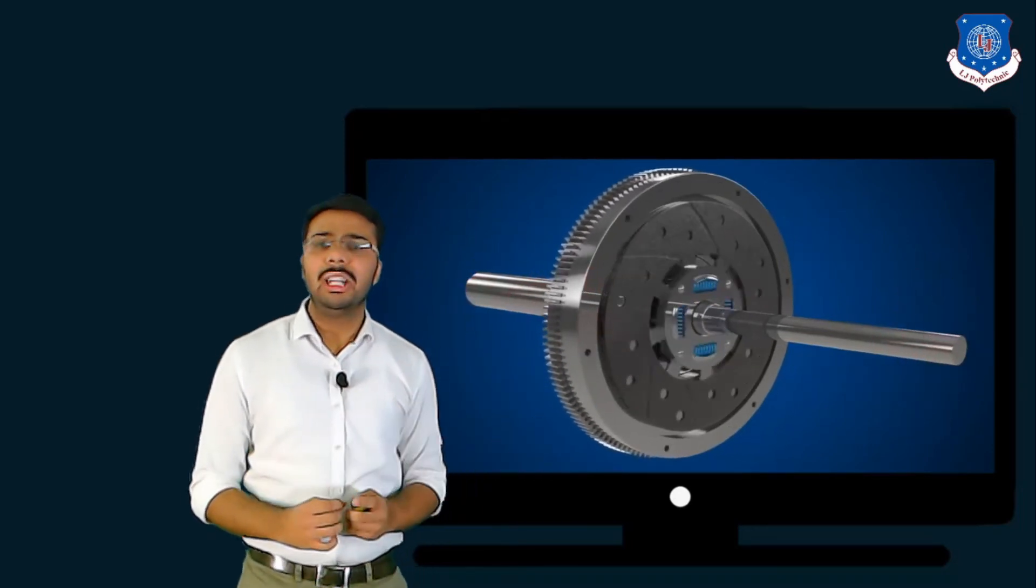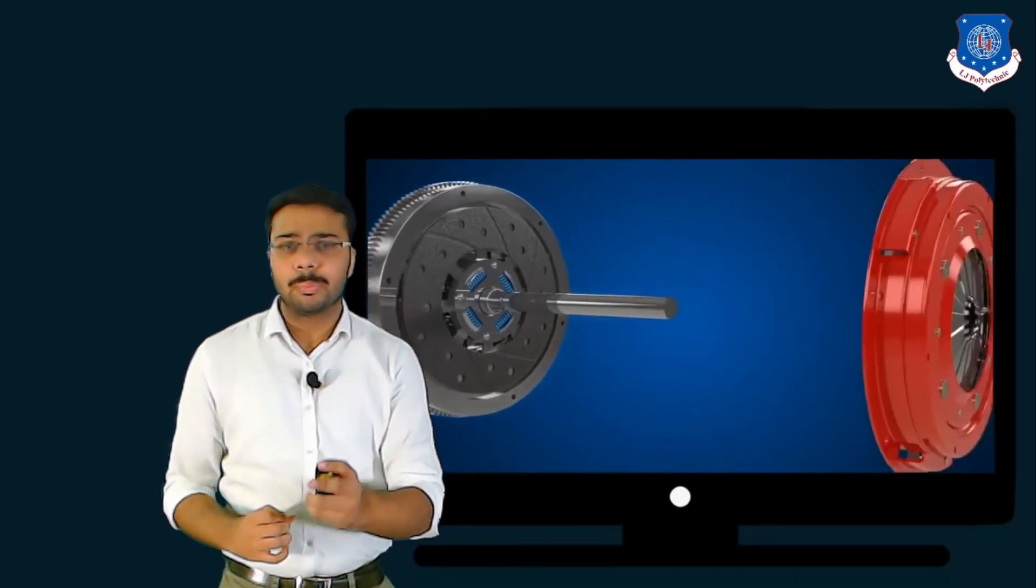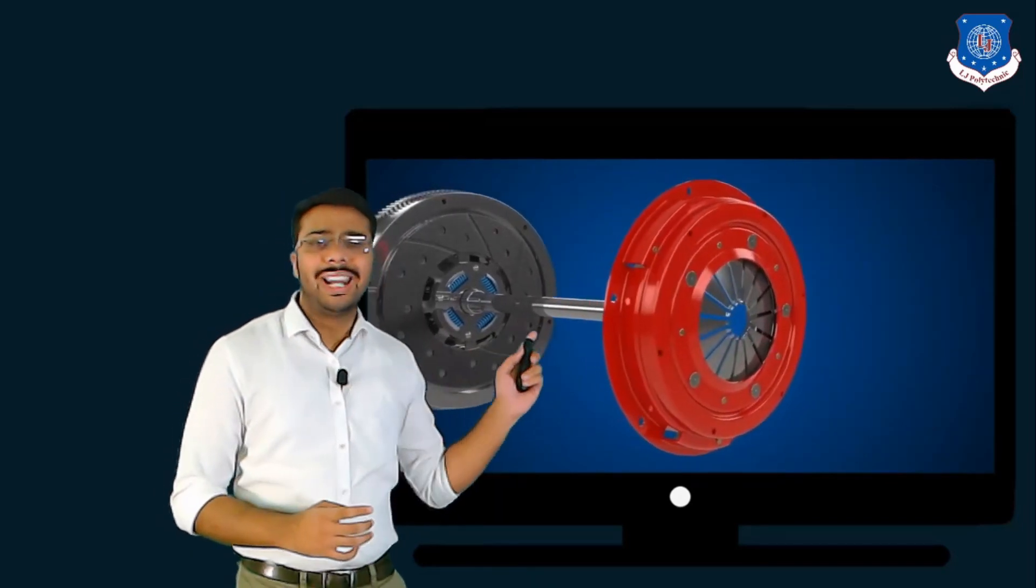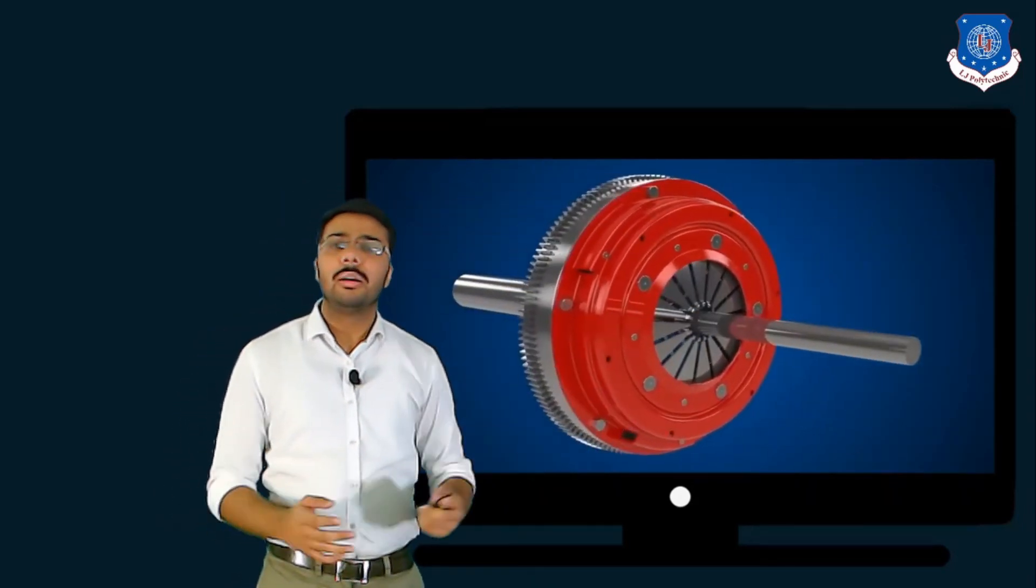Over it is the assembly of the diaphragm spring and pressure plate. It is directly attached on the flywheel using bolts.